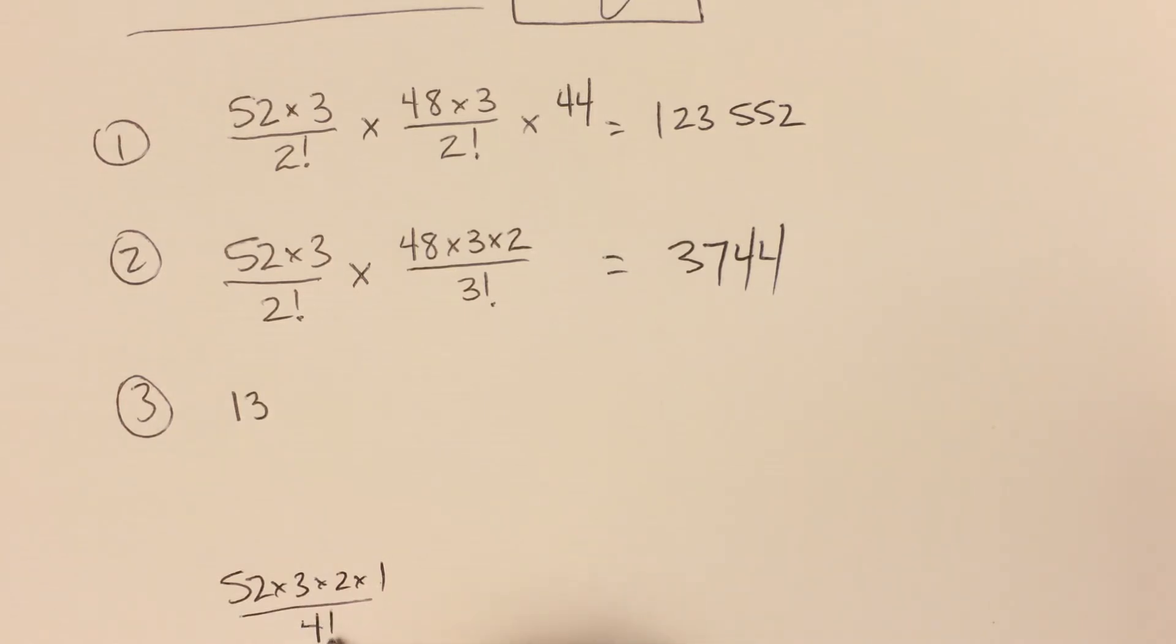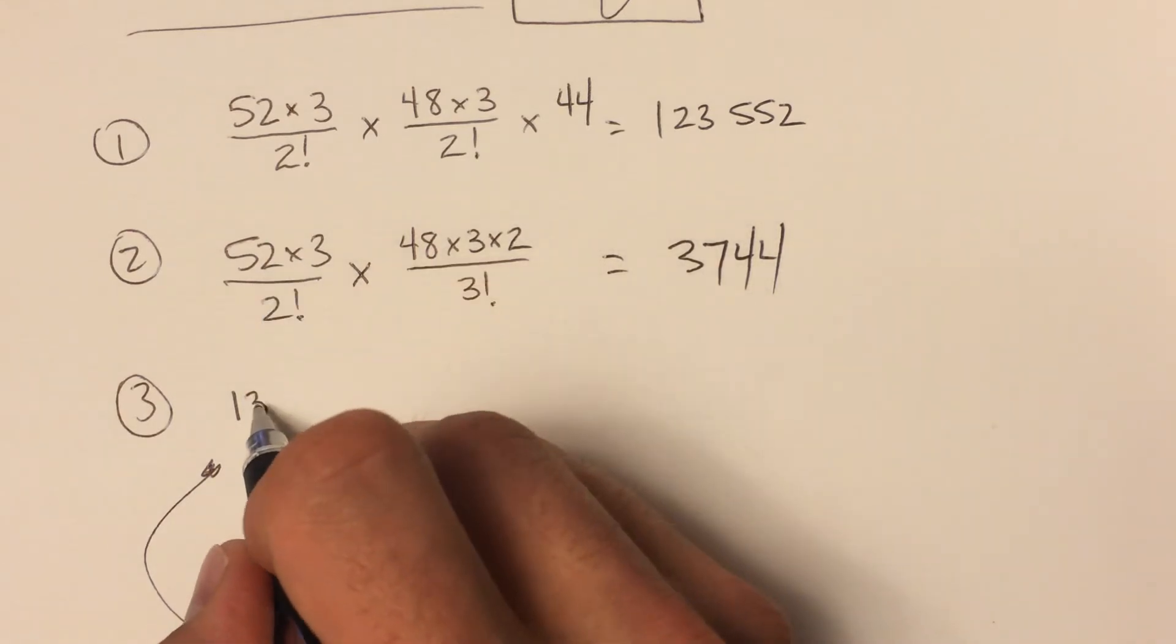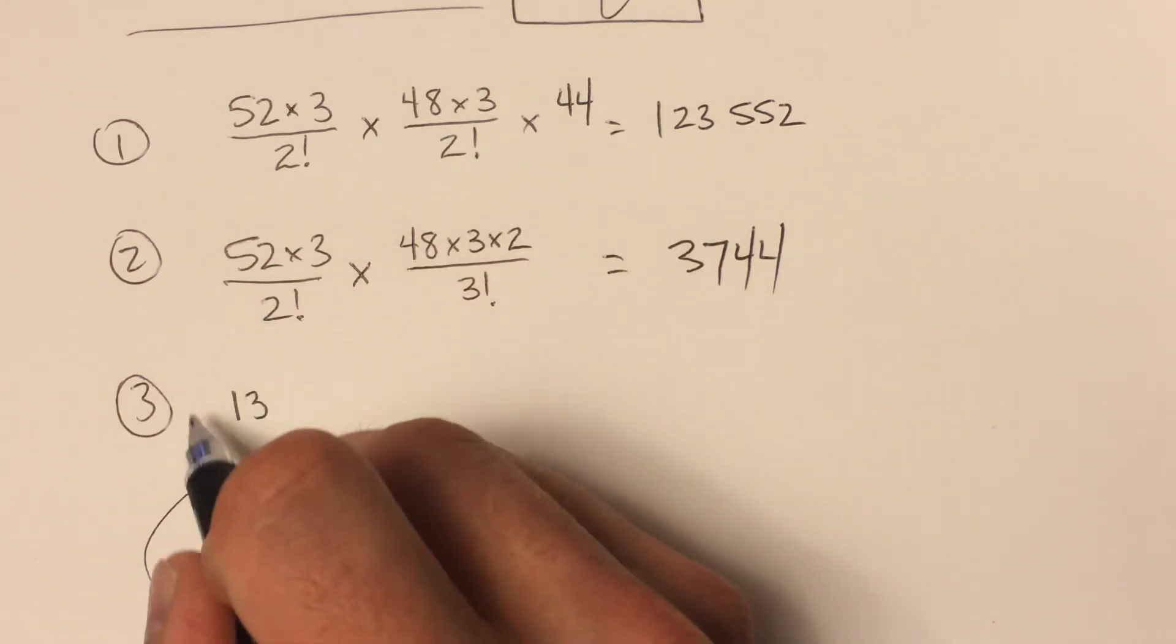And we would divide by four factorial, which just gives us 13. So we select which value we're going to make our four of a kind out of.